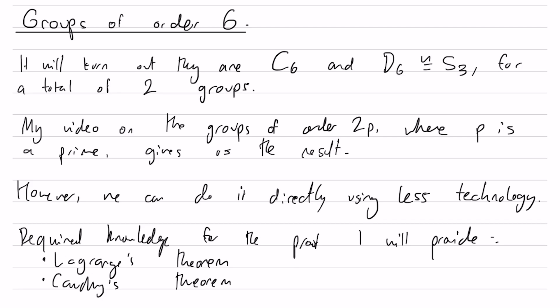In this video, we'll classify the groups of order 6 up to isomorphism. It will turn out that the only two results are C6, the cyclic group of order 6, and D6, the dihedral group of order 6, which happens to also be isomorphic to the symmetric group on three letters, for a total of two groups of this order.